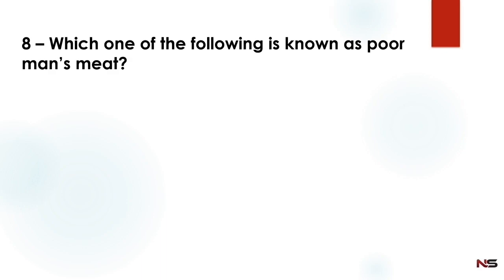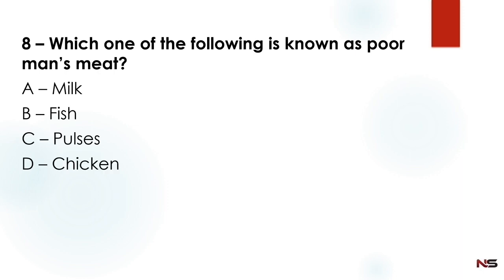Next question: Which one of the following is known as poor man's meat? Option A: milk. Option B: fish. Option C: pulses. Option D: chicken. The correct answer is pulses.